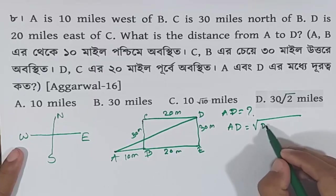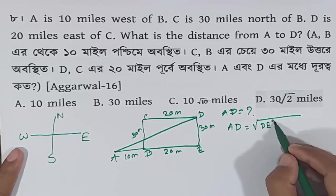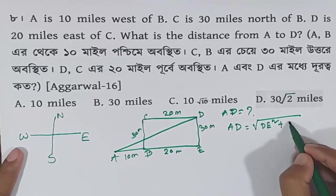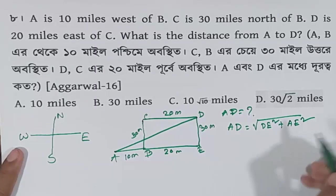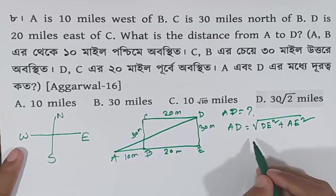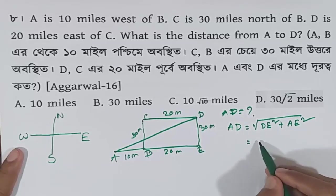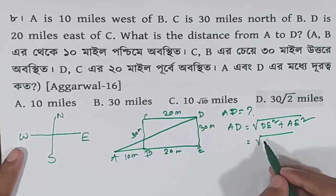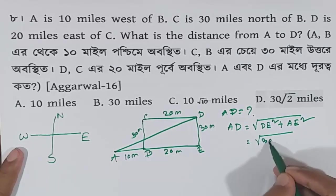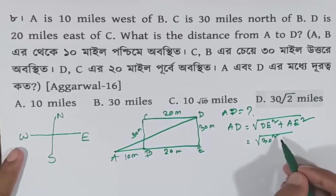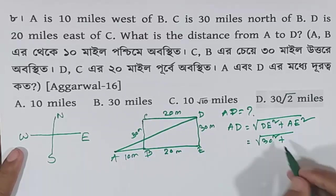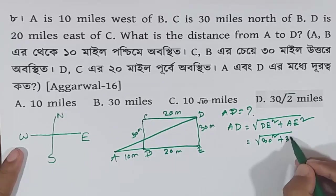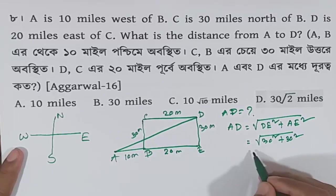We apply the Pythagorean theorem: DE squared plus another side squared. That is 3 squared plus 1 squared — which means 3 squared.